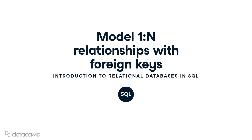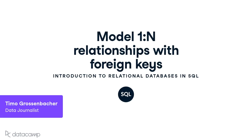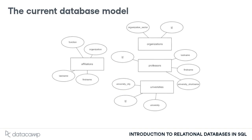Welcome to the last chapter of this course. Now it's time to make use of key constraints. Here's your current database model. The three entity types — professors, organizations, and universities — all have primary keys, but affiliations doesn't, for a specific reason that will be revealed in this chapter.